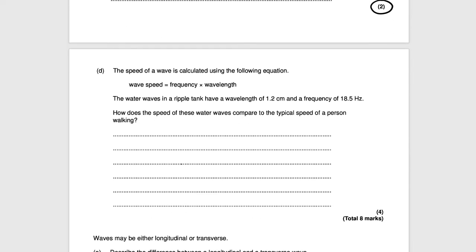Next question. It says the speed of a wave is calculated using the following equation: wave speed equals frequency times wavelength. The water waves in a ripple tank have a wavelength of 1.2 centimeters and a frequency of 18.5 hertz. How does the speed of these water waves compare to the typical speed of a person walking? The typical speed of a person walking is 1.5 meters per second. We need to work out the wave speed and then compare it. We're given the wavelength and frequency so we just need to multiply them and change the units.